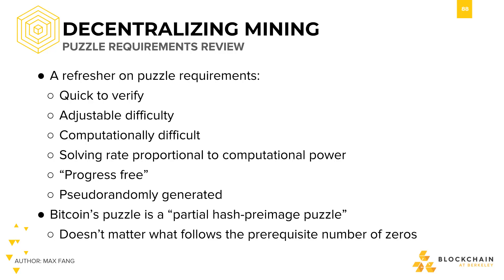Here's a quick reminder on what properties a cryptographic puzzle should have. A puzzle should be hard enough to solve, but easy to verify. In Bitcoin, finding a nonce is incredibly difficult, but verifying that a particular nonce is correct is much, much easier. The difficulty should be adjusted to account for changes in mining technology, such as the development of ASICs. In Bitcoin, the difficulty is adjusted every two weeks.